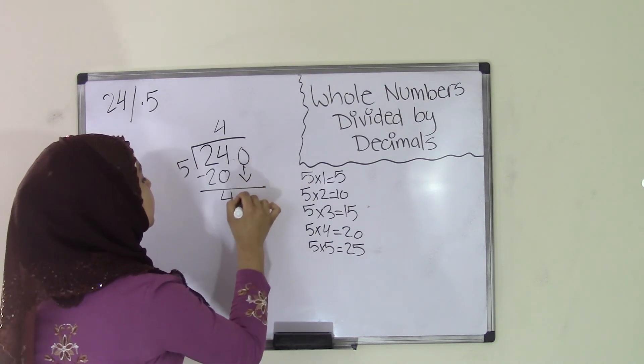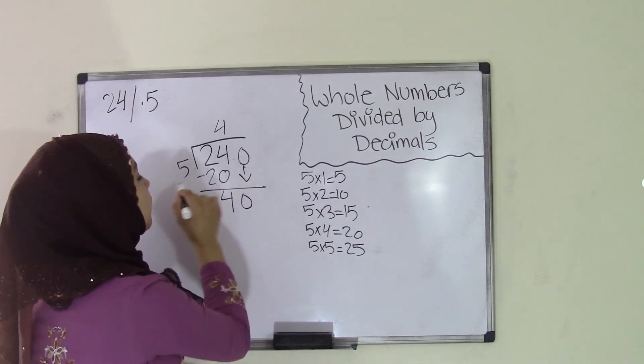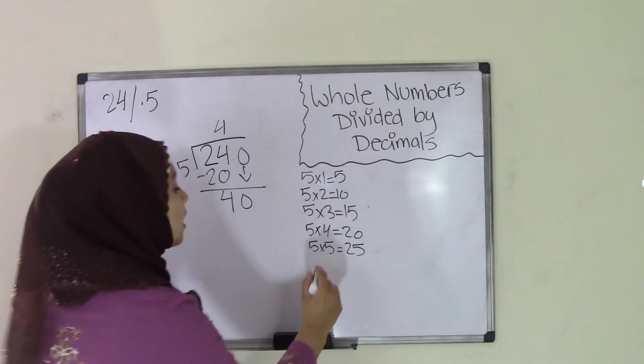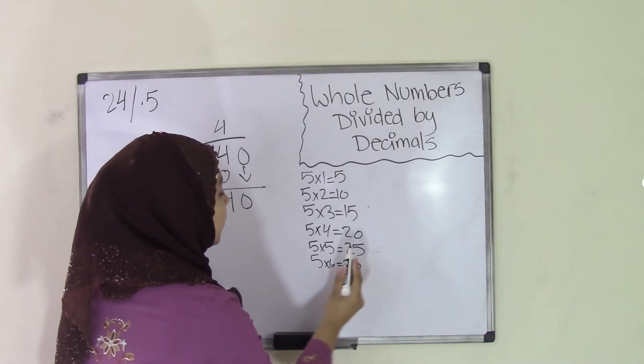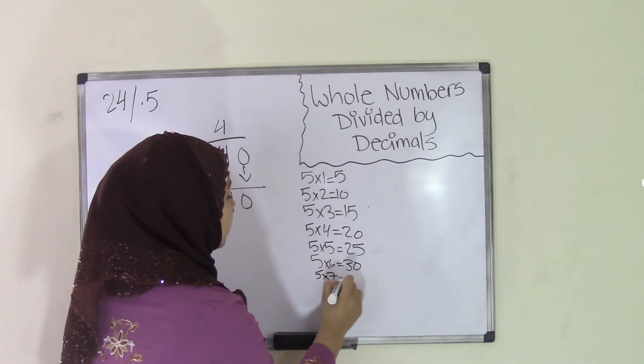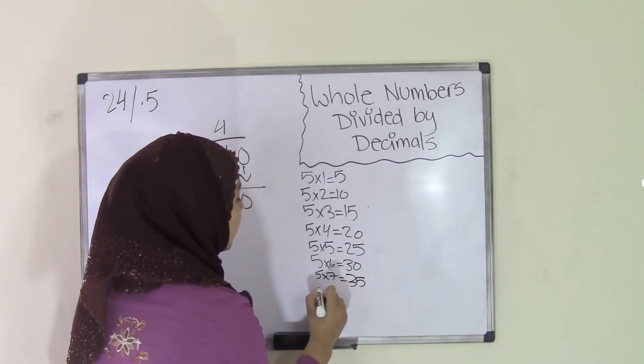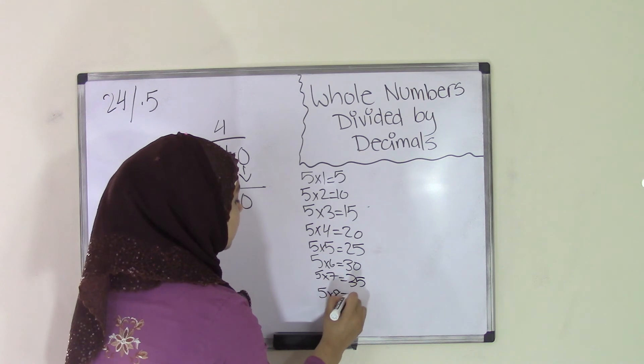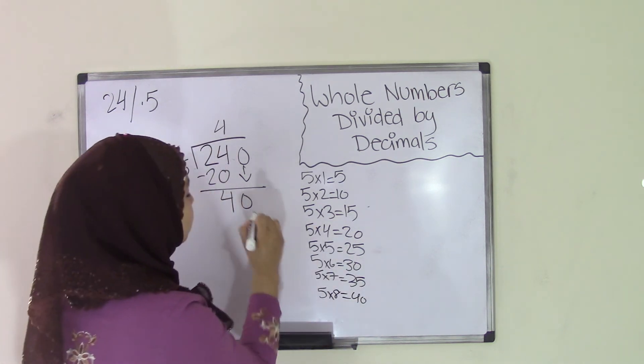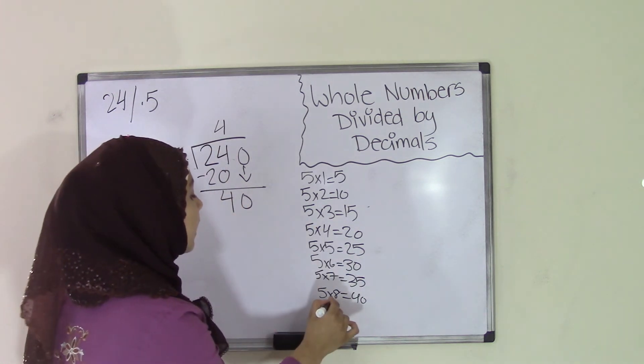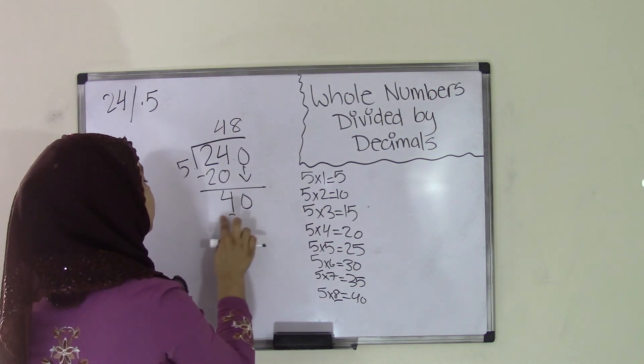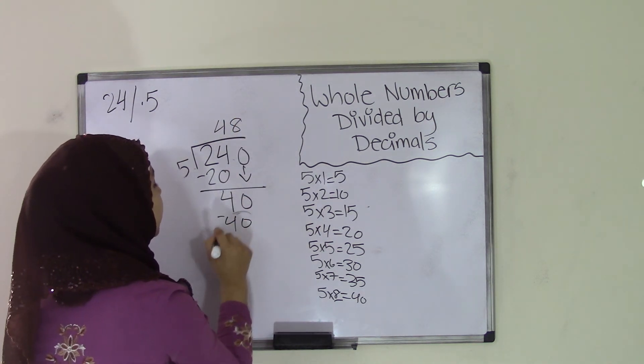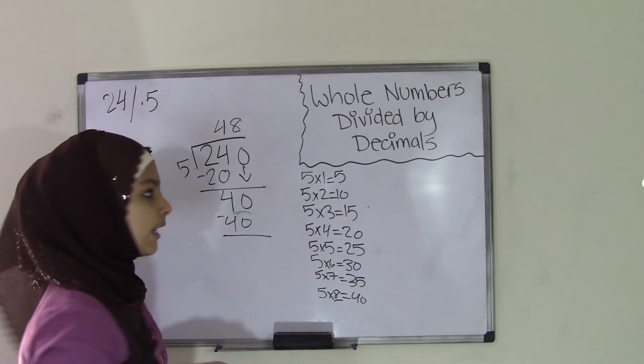Now bring down that 0. Now you have 40. 40 divided by 5, so how many times does 5 go into 40? Let's find out. So if we keep on going in our times table, 5 times 6 is 30. 5 times 7 is 35. And 5 times 8 is 40. 40 matches 40. That means 5 goes into 40 8 times. So we're going to put 8 in our quotient, and 5 times 8 is 40. Now 40 take away 40 is 0.